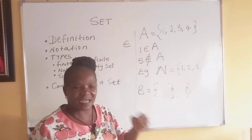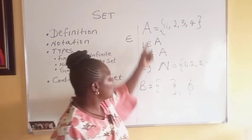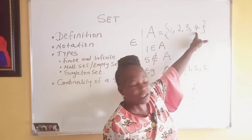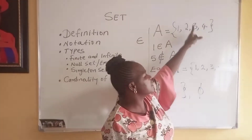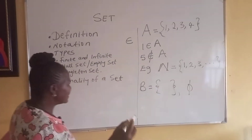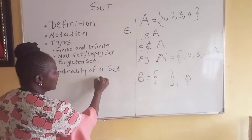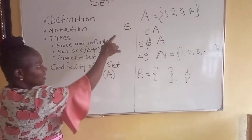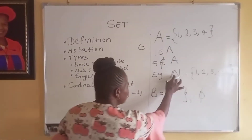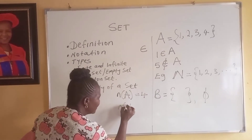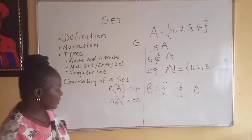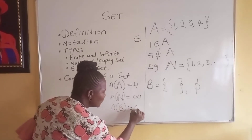Now let's talk about the cardinality of a set. Cardinality has to do with the number of elements in the set. For our set A = {1, 2, 3, 4}, the number of elements is four — so the cardinality of A equals 4, written |A| = 4. For the set of natural numbers, the cardinality equals infinity since it's infinite. For the empty set B, the cardinality equals zero.